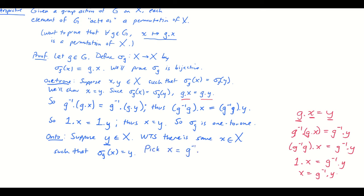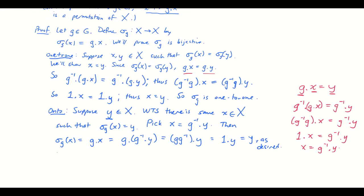We're going to pick x to equal the result of g inverse acting on y. So then sigma_g(x) is equal to g·x, which is the same as g·(g^(-1)·y), which by our composition rule, that's the same as (g·g^(-1))·y. And that's the identity acting on y, which is y. And that's what we wanted. So that means sigma_g is onto and thus a bijection since we already showed it's one-to-one.